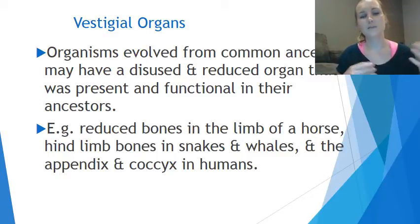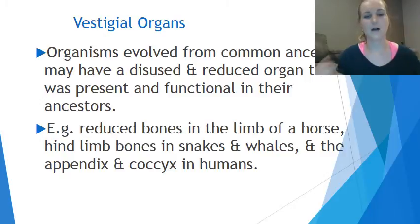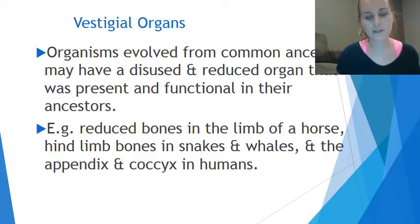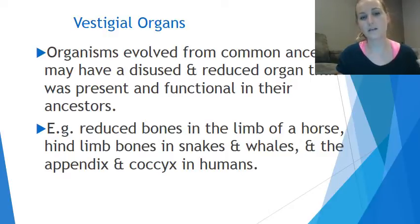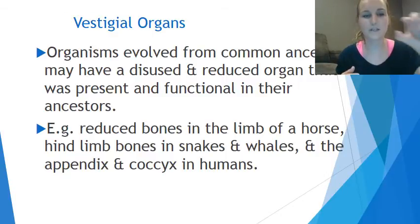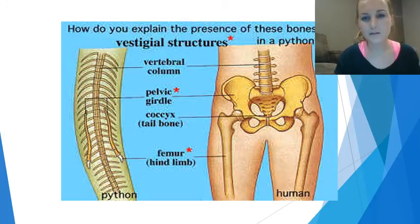Last but not least, we have vestigial organs. These organisms have evolved from a common ancestor, but this particular organ or structure has not been used and has been reduced. It was once present and functional in the ancestor but has become almost redundant — not needed — and so it becomes somewhat reduced. For example, we have the coccyx, the tailbone in humans, which was once a tail in our ancestors. Because we had no use for a tail, adaptive pressures caused this tail to reduce to just a tiny bone at the end of our spine.